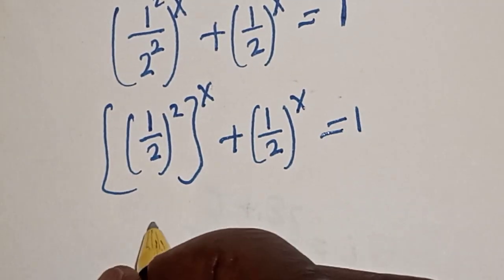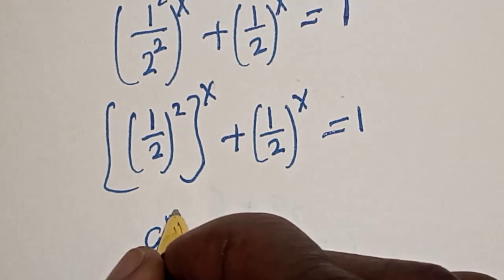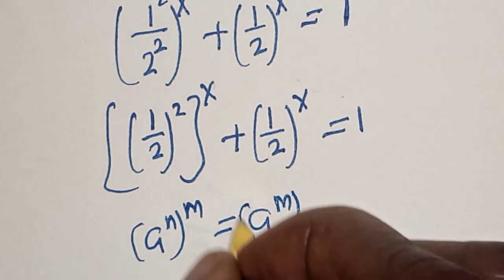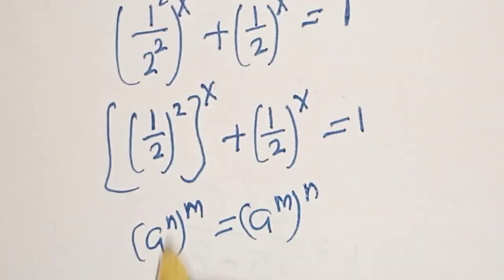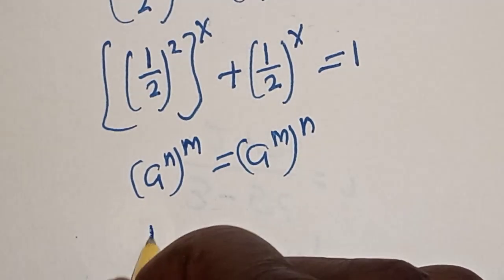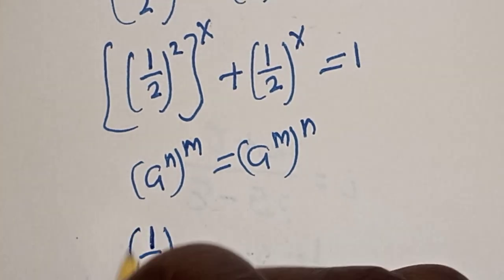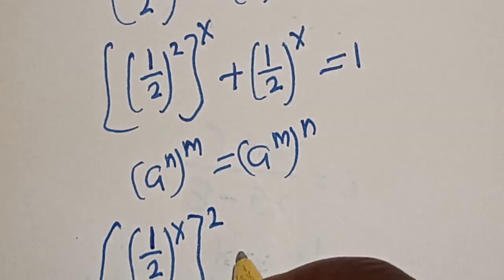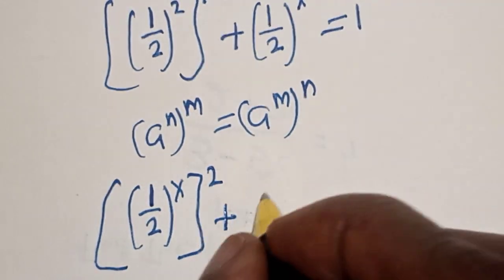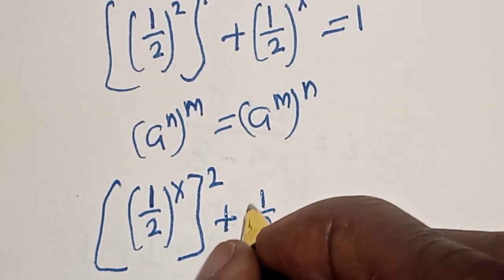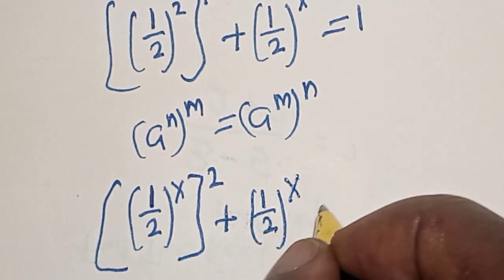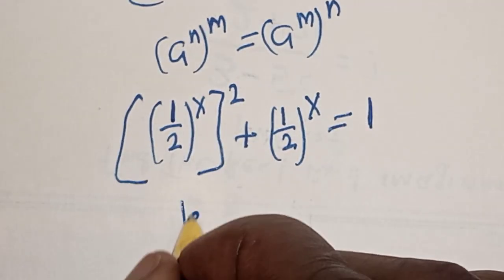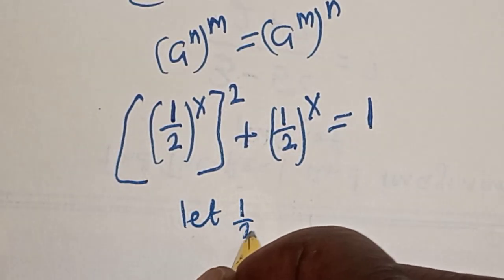Remember the rule: a raised to the power n raised to the power m equals a raised to the power mn. Applying this, 1 over 2 squared all raised to the power s becomes 1 over 2 raised to the power 2s.